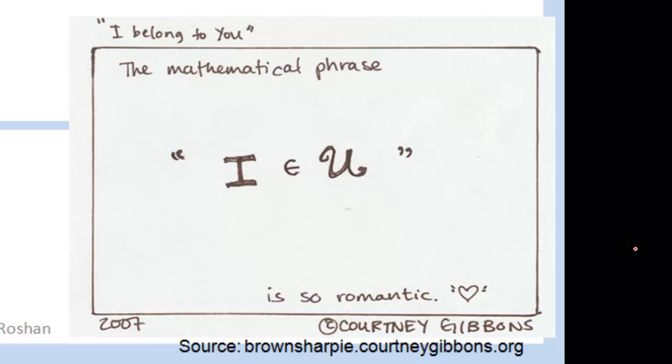The mathematical phrase, I is an element of you, that's right, I is an element of you, means that I belongs to you. So romantic.